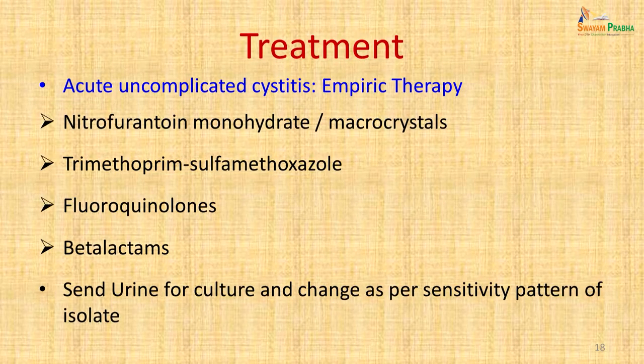Treatment of uncomplicated cystitis: empiric therapy includes nitrofurantoin, trimethoprim-sulfamethoxazole, fluoroquinolones such as ciprofloxacin and norfloxacin, and beta-lactam antibiotics such as ampicillin and amoxicillin. However, resistance in urinary pathogens is on the rise, so urine for culture should always be sent and therapy changed according to the sensitivity pattern of the isolate obtained from the patient's urine sample.